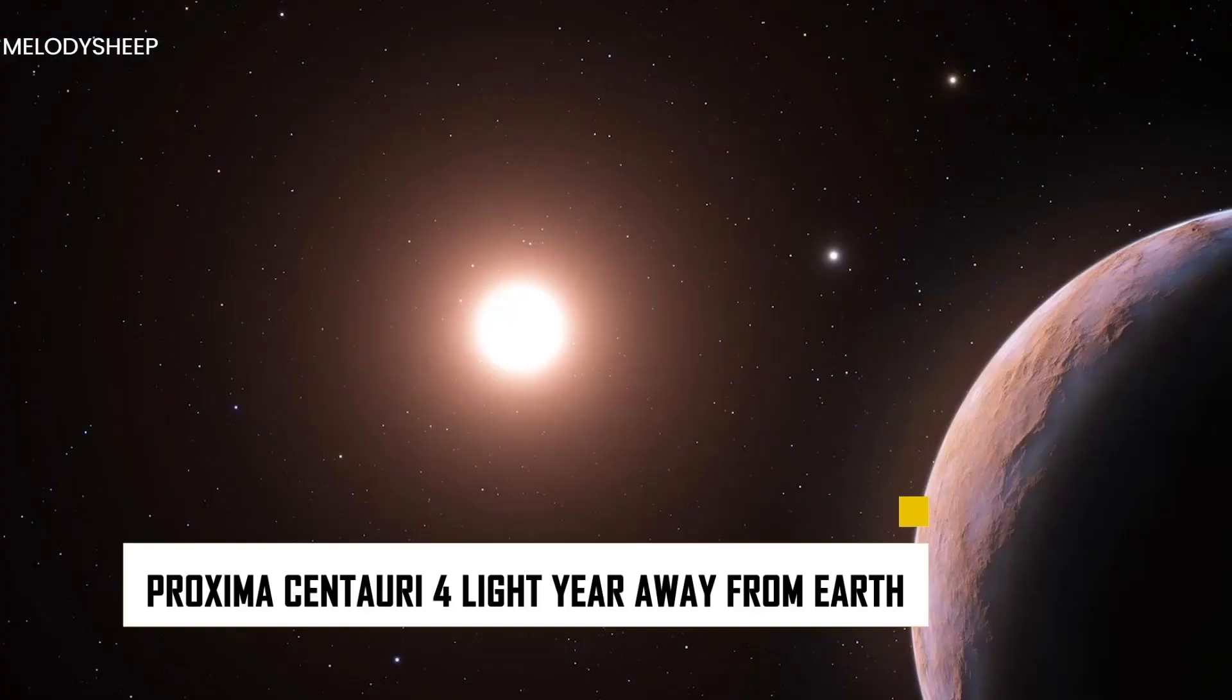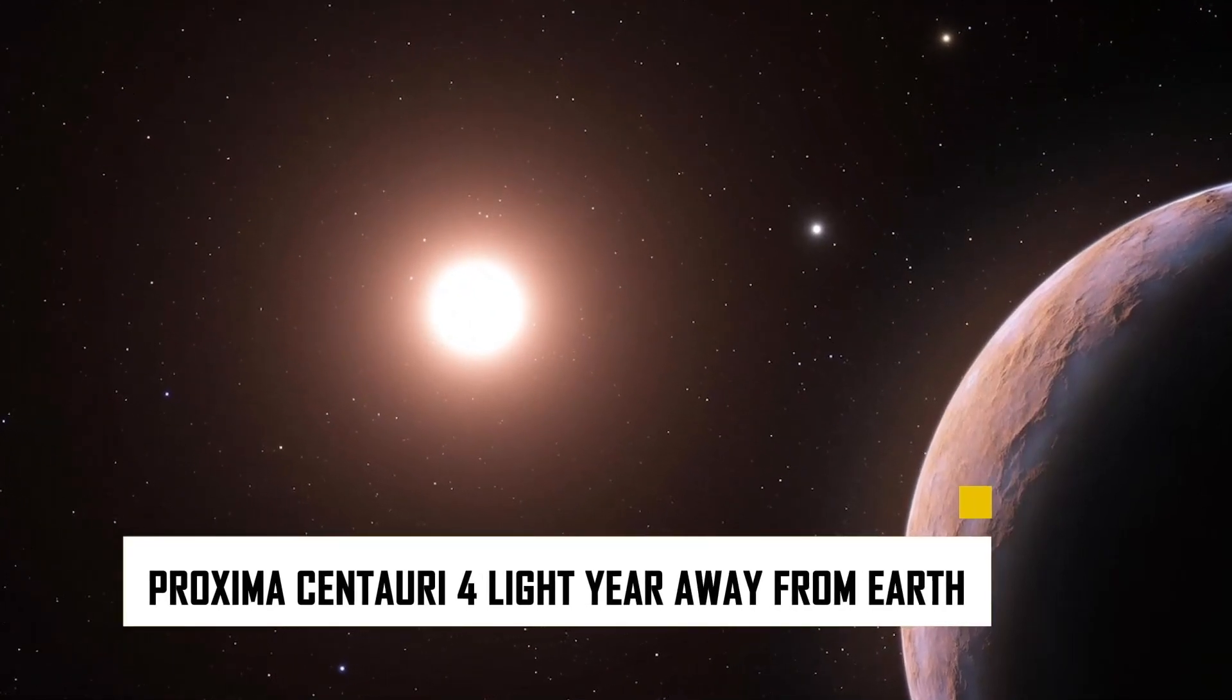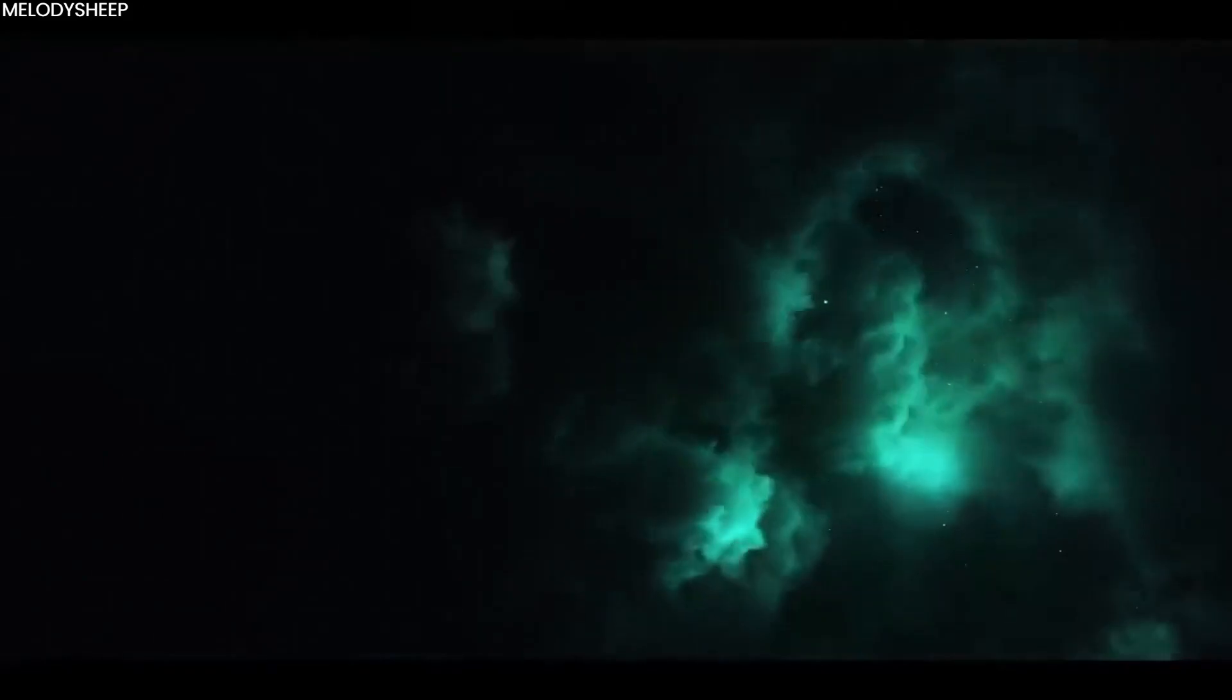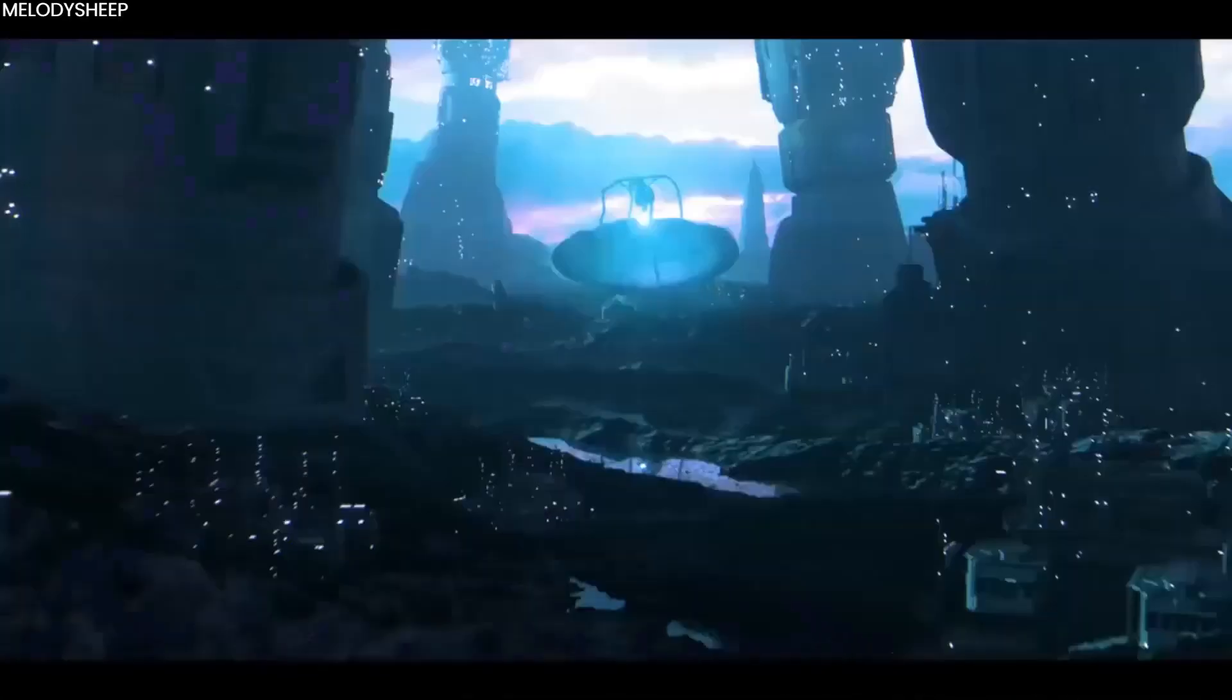For your information, Proxima Centauri is only four light-years away from Earth. The most brilliant minds in the space community have been puzzled by the unusual anomalies known as artificial lights. But what exactly are they? Does this suggest that there is intelligent life on the planet?